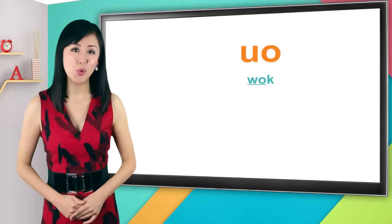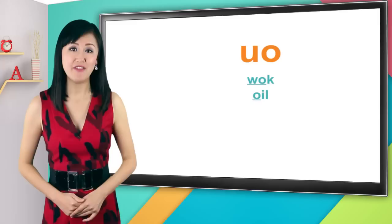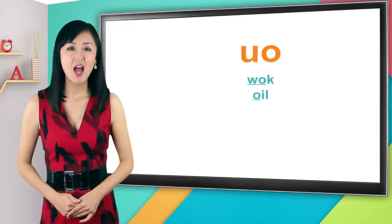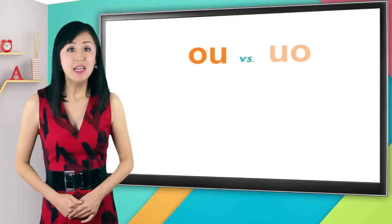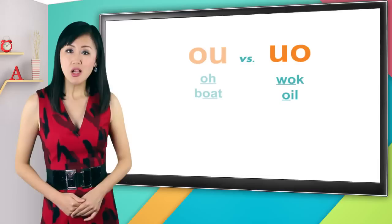Last one for this lesson is u-o, pronounced as wo. It sounds like wo in wok or o in oil, but make sure there's a strong wu sound at front, okay? u-o is wo, wo. Also please don't mistake u-o with o-u. o-u is pronounced as o, and u-o is pronounced as wo.